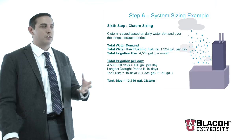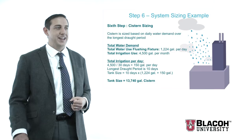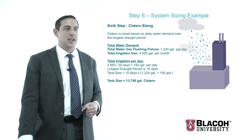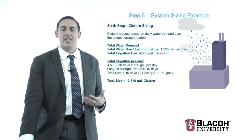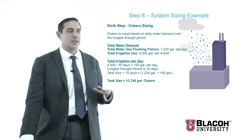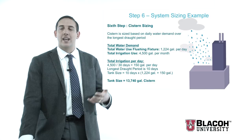Looking at my cistern sizing, I'm going to size it based on my longest drought period, which in this area is about 10 days. Looking at my flushing fixtures of 1,224 gallons per day and my total irrigated area of 4,500 gallons per month — dividing that out, I need about 150 gallons per day for irrigation. Adding that to my 1,224 gallons times my 10 days, I need about a 13,740-gallon cistern, which makes sense. I'm going to get about four precipitation events per month, collecting about 15,000 gallons each event to fill up my 45,000 gallons of collectible rainwater.